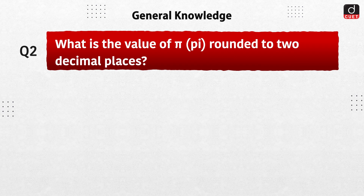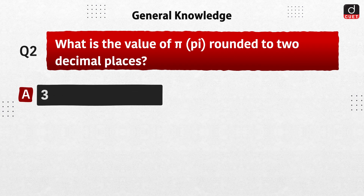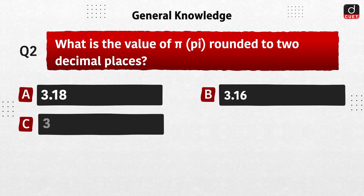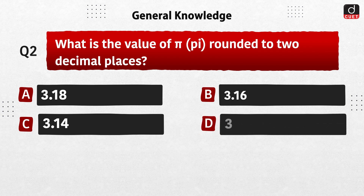Next question: what is the value of pi rounded to two decimal places? 3.18, 3.16, 3.14, or 3.20? The correct answer is option C, 3.14.